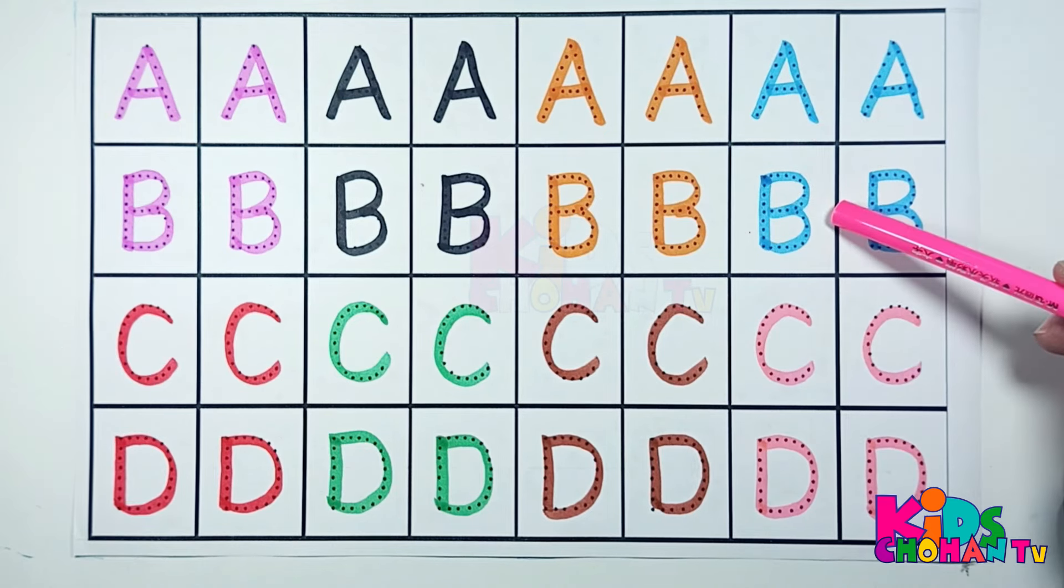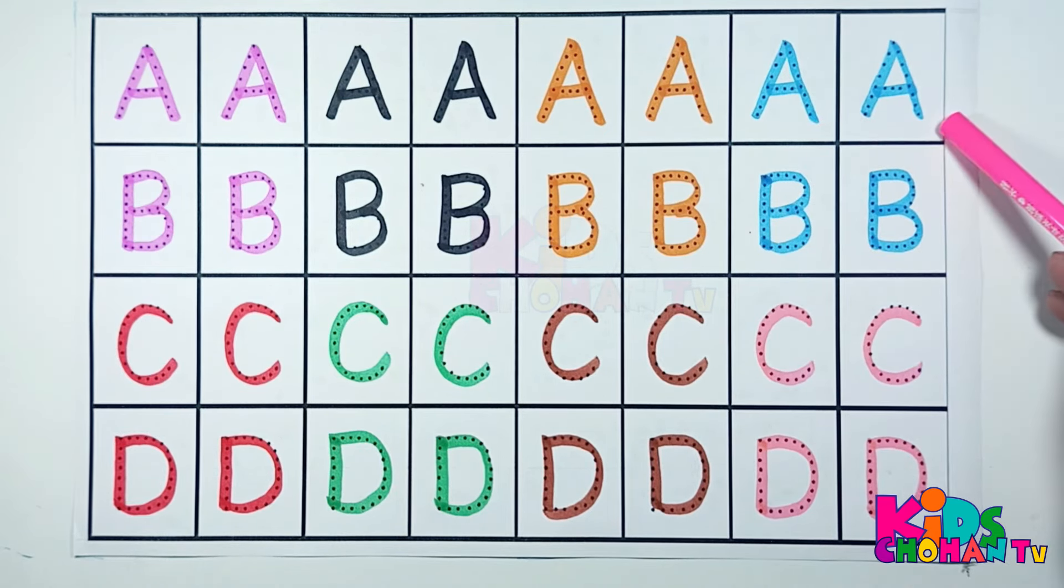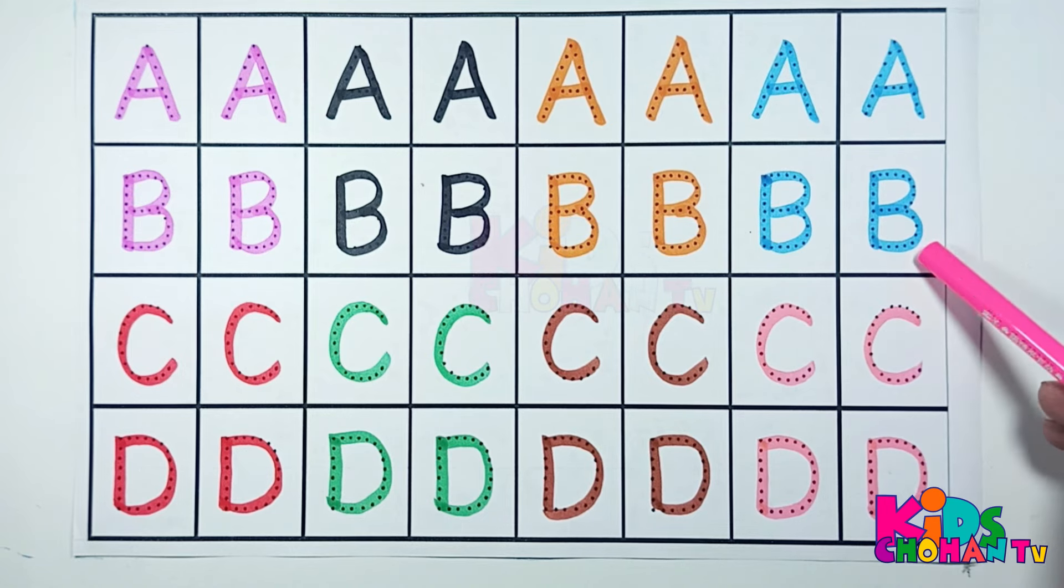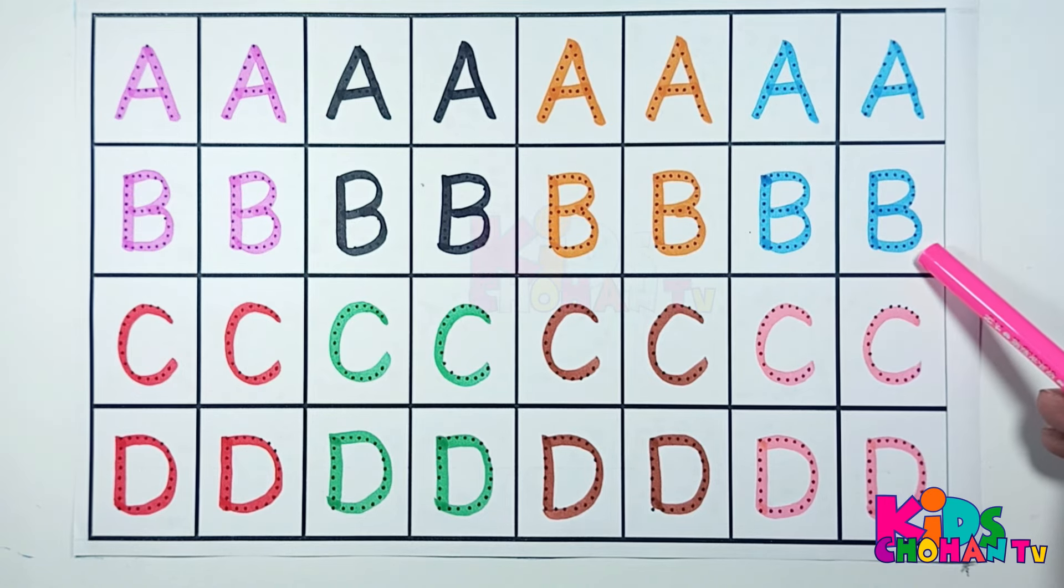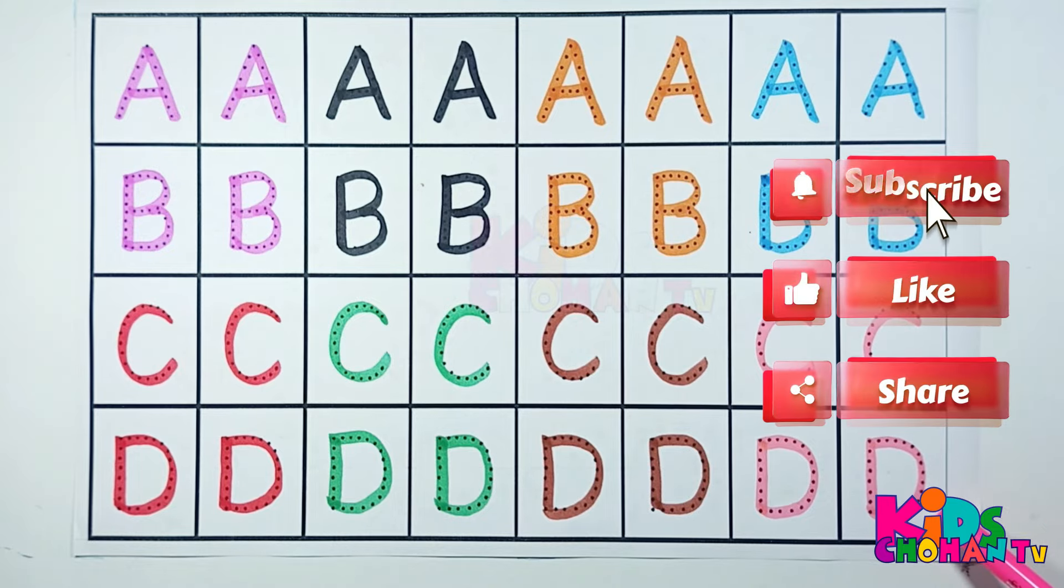A, B, C, D. A for alligator, B for butterfly, C for cat, D for dog.